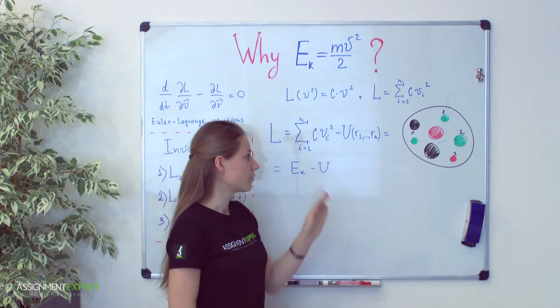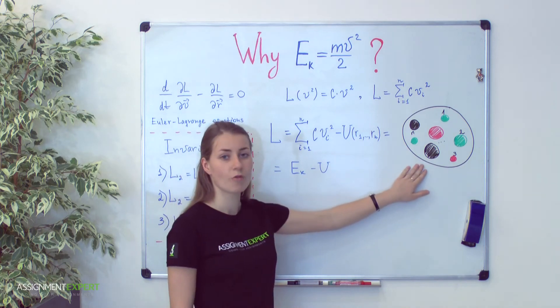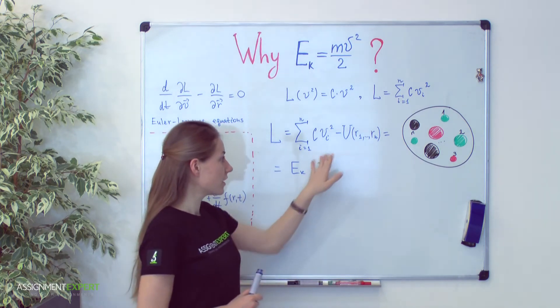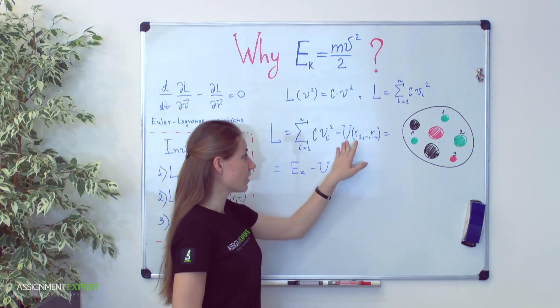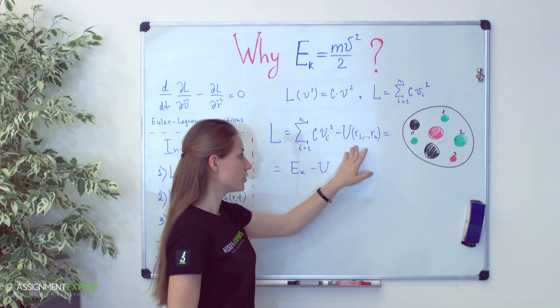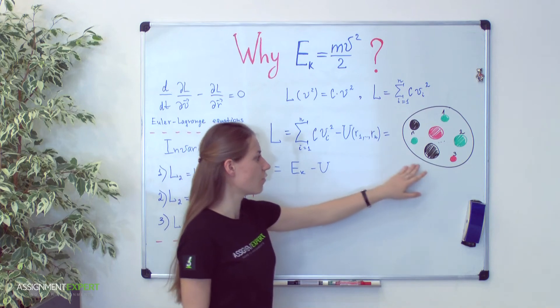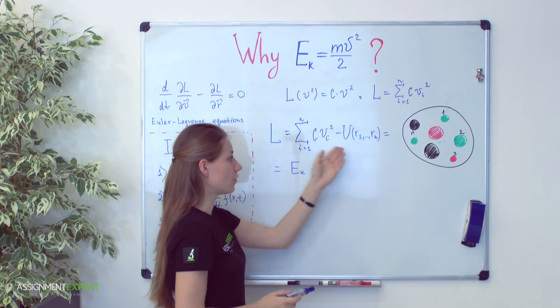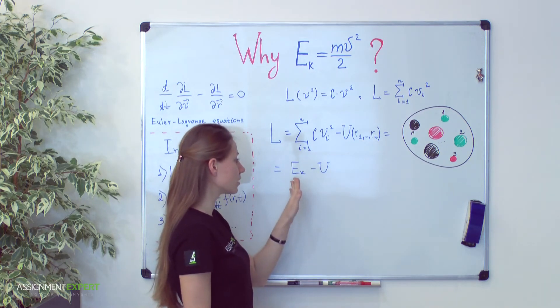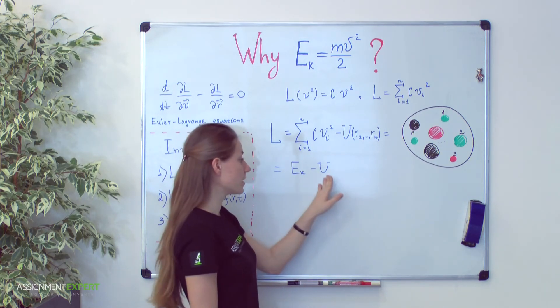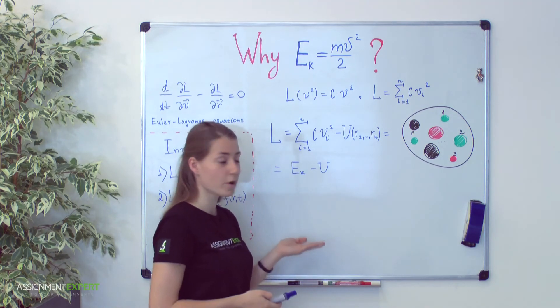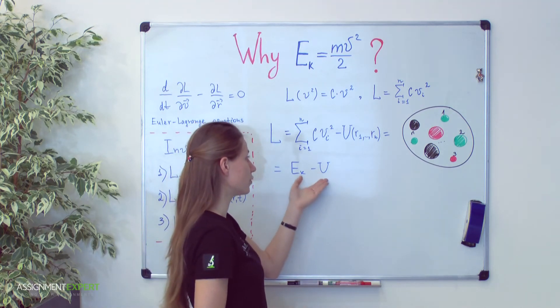Also, we can generalize our Lagrange function into a system of interactive particles. It turns out that we can add a function u which depends on relative positions of every particle. The first term which depends on velocities of each particle is called kinetic energy. And the second term which depends on relative positions, relative coordinates of every particle is our potential energy.